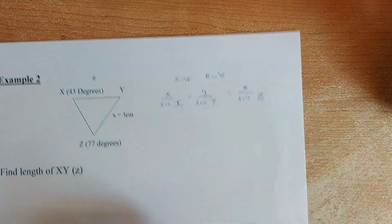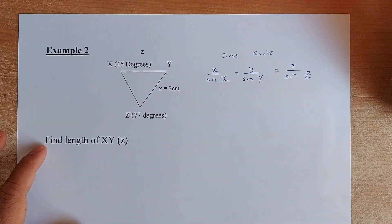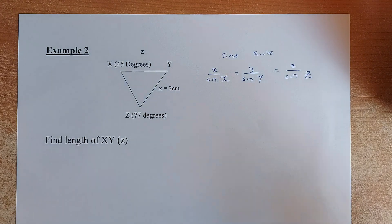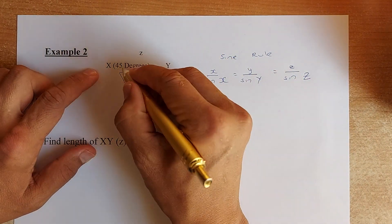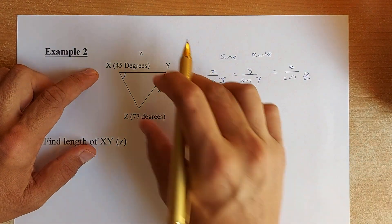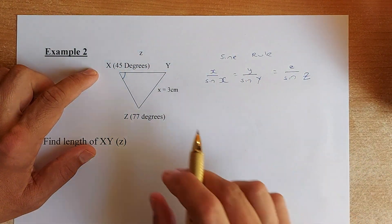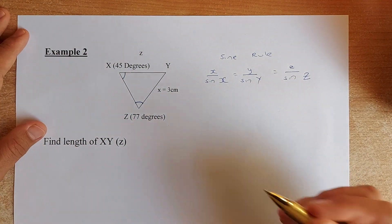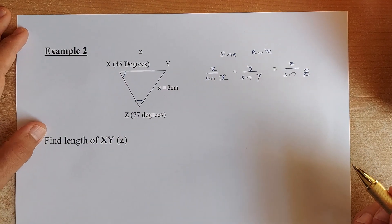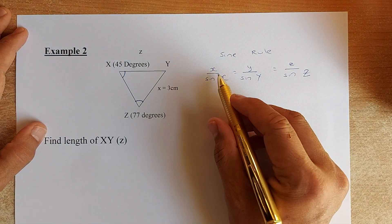We should do one more to reinforce your learning. The next one is going to be similar but different numbers. This time we are going to label the triangle X, Y and Z. X is 45 degrees. The length is 3 and the angle Z is 77. Again, because we are finding the side, we have to use the sides on top.